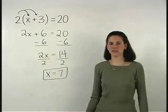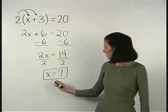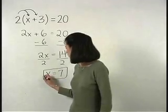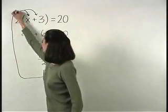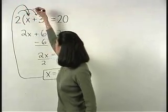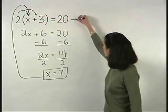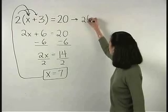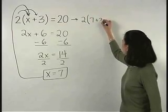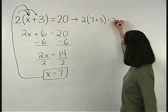Remember that we can check our answer by plugging a 7 back in for x in the original equation. And we have 2 times parentheses, 7 plus 3 equals 20.